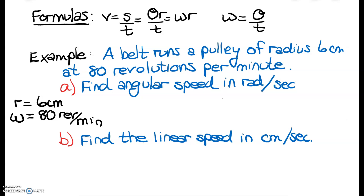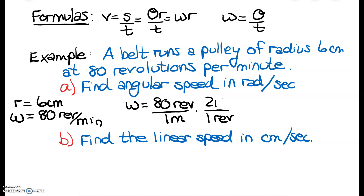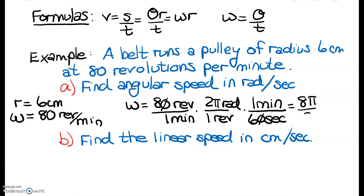They want us to find our angular speed in radians per second. We already have it set up in revolutions per minute, so we just need to do some dimensional analysis. If I change one revolution, I know one revolution is 2π radians. And if I change minutes, 1 minute is equal to 60 seconds. So when I cross off my units and multiply and reduce, I get 8π over 3. Our revolutions reduce, our minutes reduce, and we're left with radians per second, which is exactly what they asked us for.